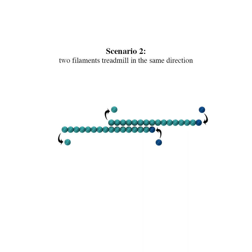In scenario 2, if two filaments treadmill in the same direction, the number of overlapping beads remains constant and no further sliding occurs.